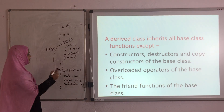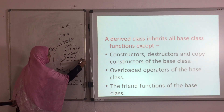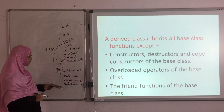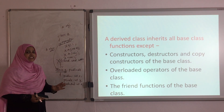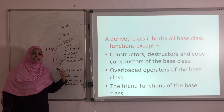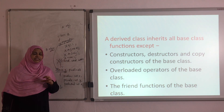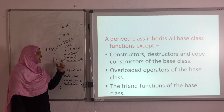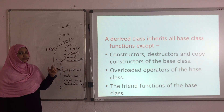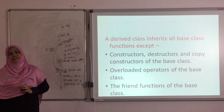Friend functions of the base class — for example, friend void add — this type of function is not going to be inherited by the subclass or derived class. In general, whenever we use the inheritance concept, the subclass is going to inherit all the properties of its base class except: constructors, copy constructors, parameterized constructors, destructors, operator overloaded functions, and friend functions of the base class.